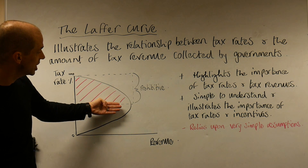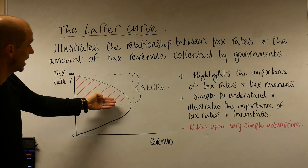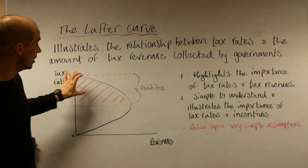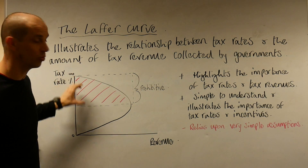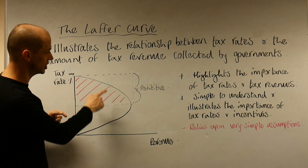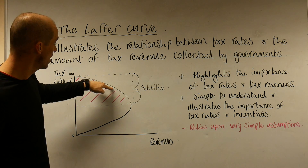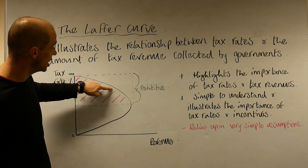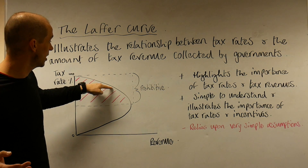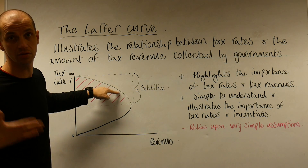You can see that reflected by the falling tax revenue in this prohibitive area — an area where you do not want to actually place your taxes. Taking a midpoint within this prohibited area, you can see that reducing that level of taxation would actually bring back an increase in tax receipts.